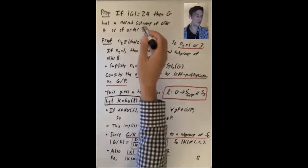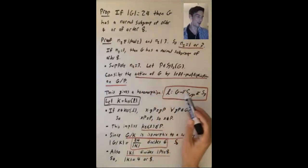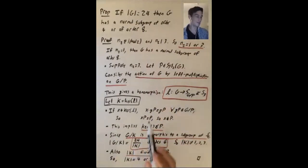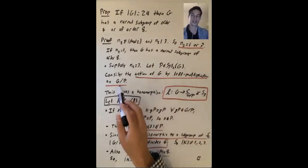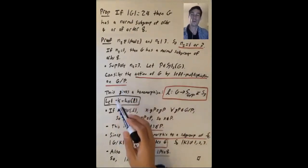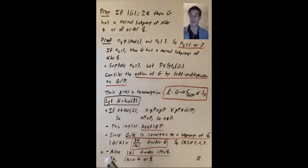Where is this normal subgroup coming from? It's the kernel of this homomorphism that comes from this group action, g acting by left multiplication on the set of left cosets of one Sylow P subgroup, Sylow 2 subgroup in the whole group. So again, this idea seems tricky at first, but it's worth getting comfortable with it because this kind of thing comes up again and again.